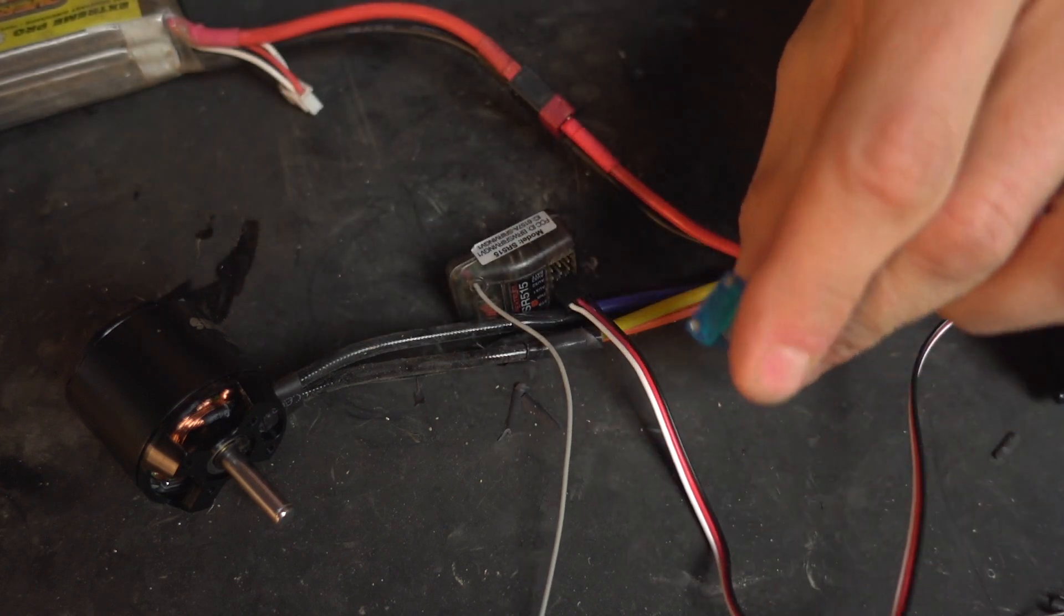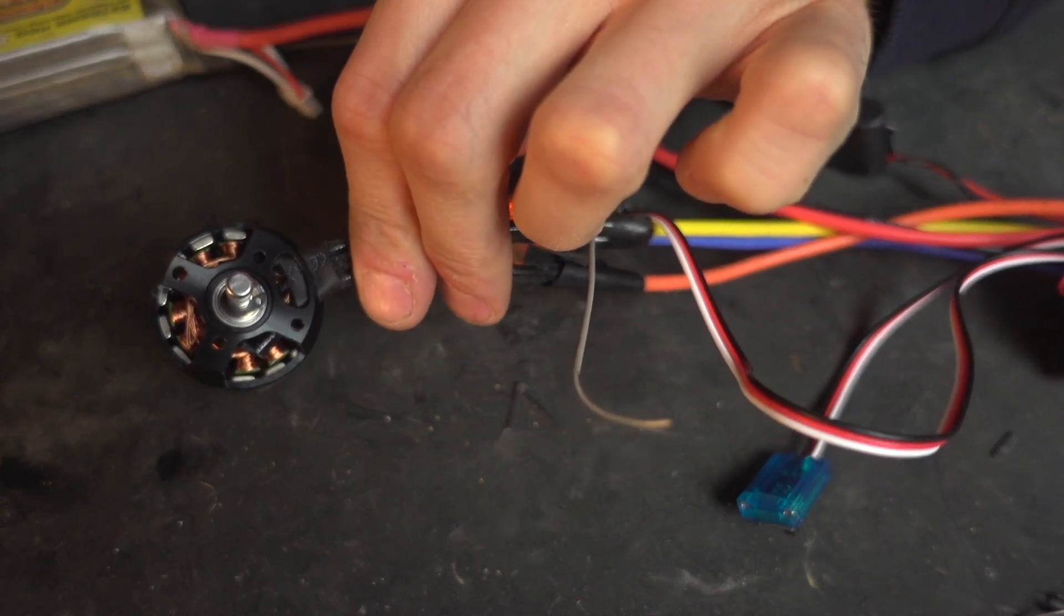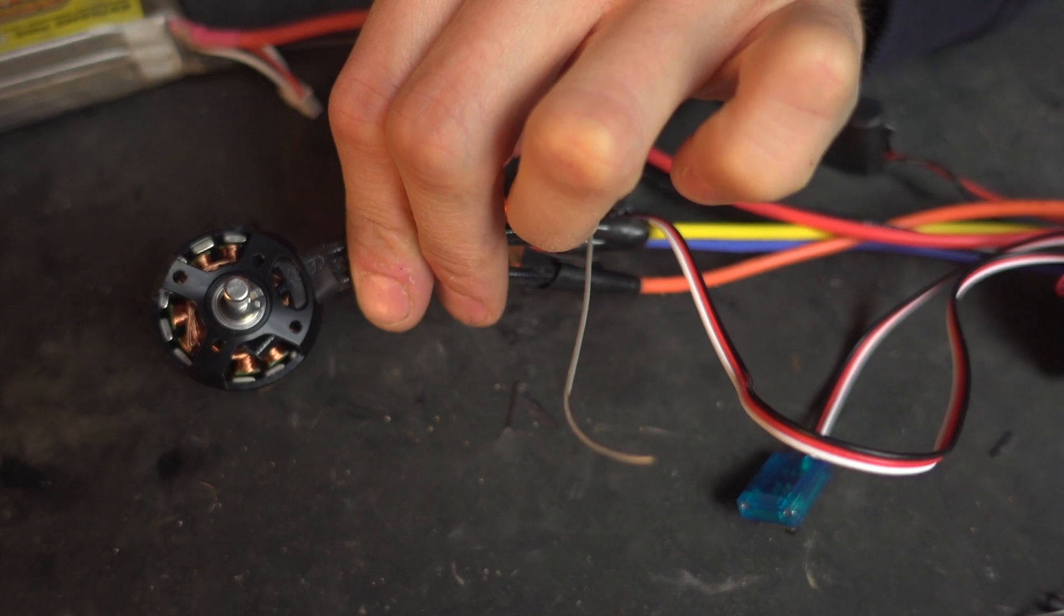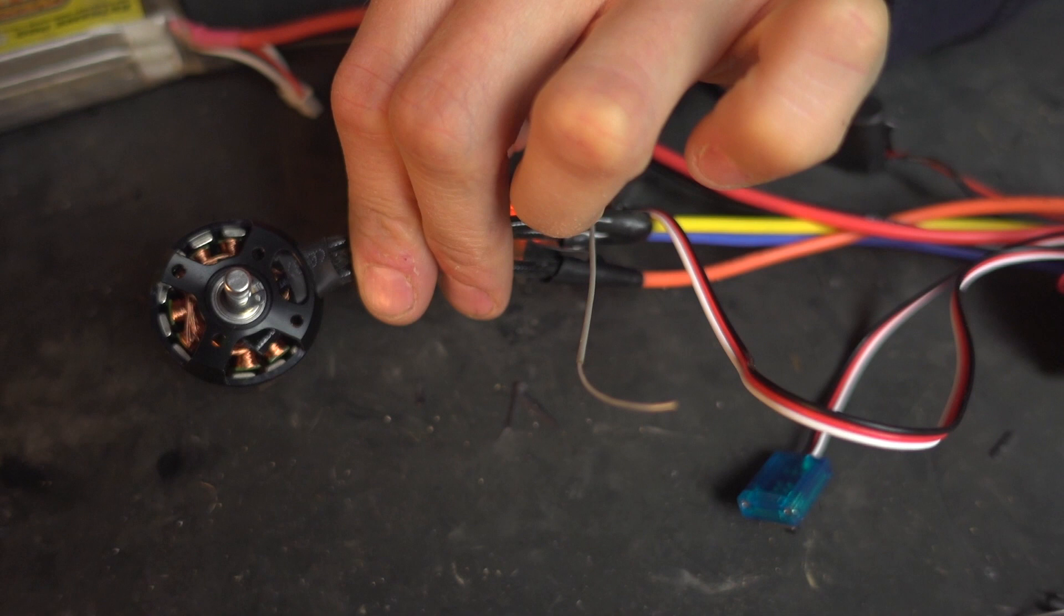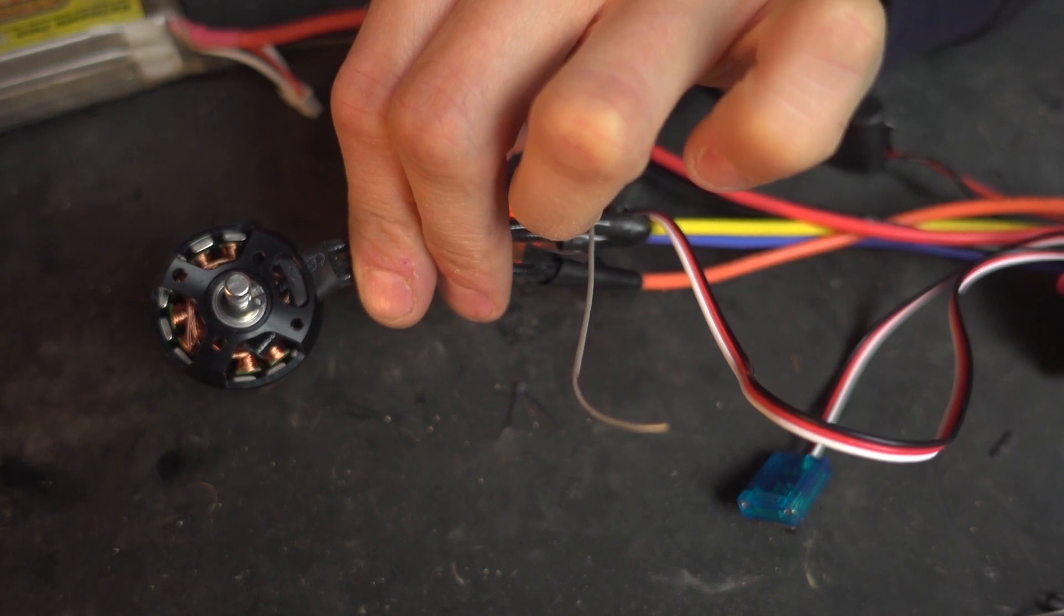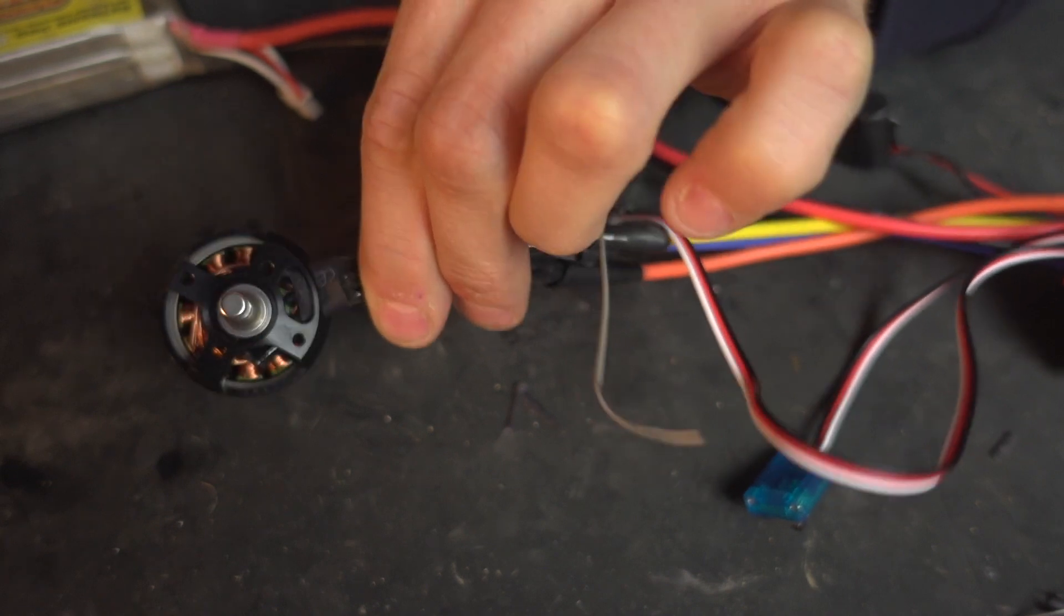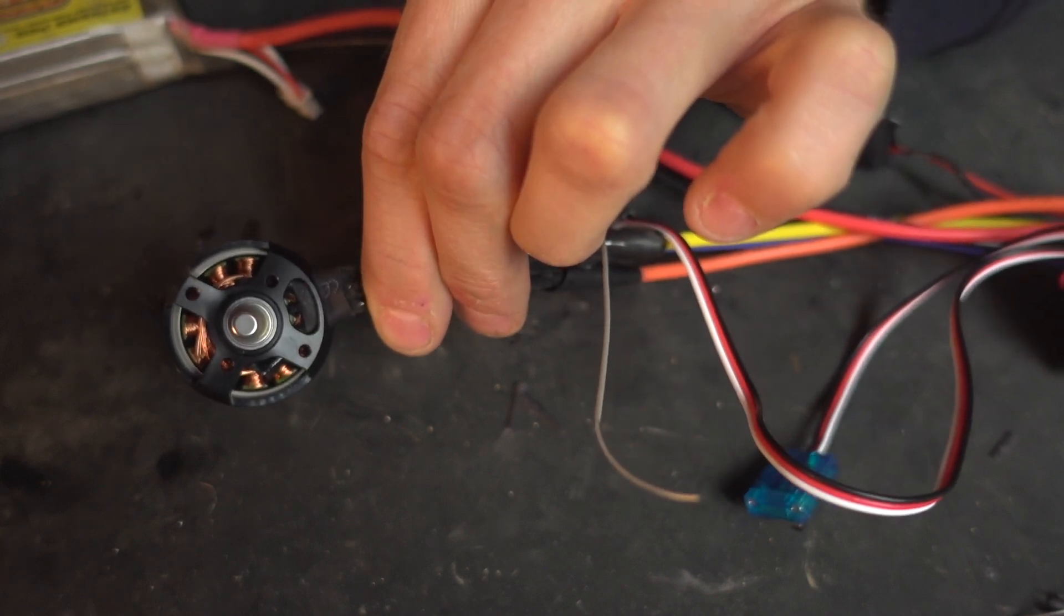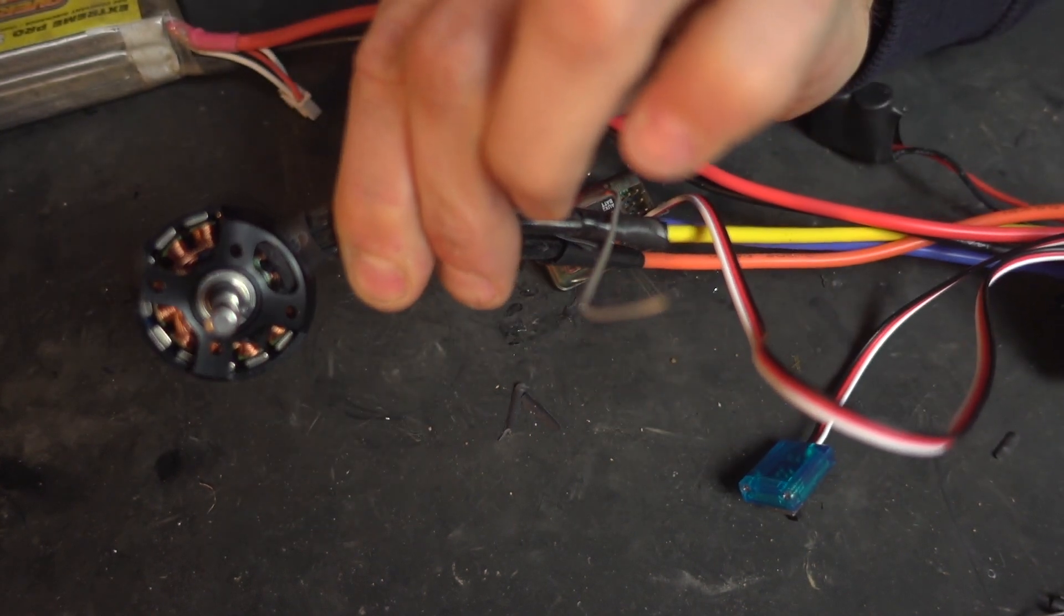So we'll turn our transmitter on and we will turn our ESC on. Now this ESC looks like it's bound because it's turned blue.